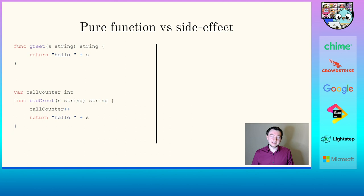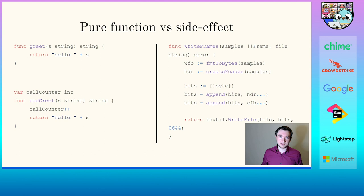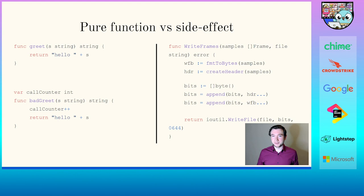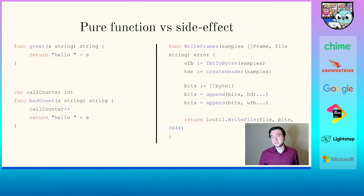Side effects are also useful and you actually want them in certain parts of your program. On the right-hand side is part of a library that generates music — at the very last statement, sound streams are being written to disk, which is a side effect. If the program didn't do this, it would be a useless music program. Having pure functions and avoiding side effects is a good idea, but the key is to isolate the functions that need side effects, so you can test the pure parts in isolation and the side-effect function is a small part of the whole process.